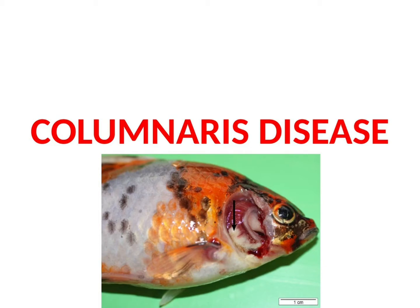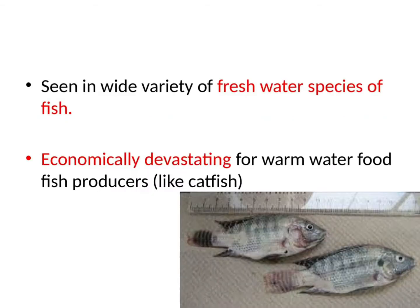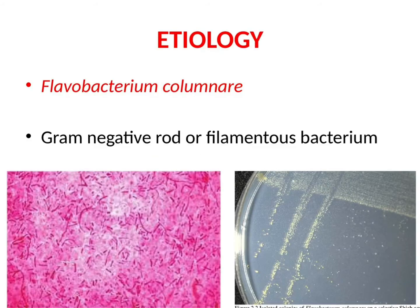This is a bacterial disease called columnaris disease. This disease is seen in a wide variety of freshwater fish species and is economically devastating for warm water food fish producers like catfish. Now let's see the etiology. Flavobacterium columnare, a gram-negative rod or filamentous bacterium, is the causative agent for columnaris disease.